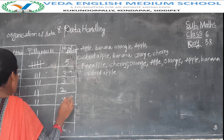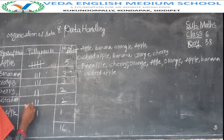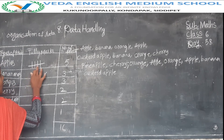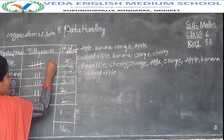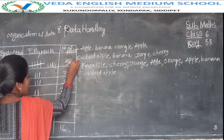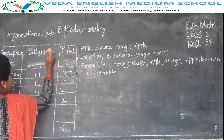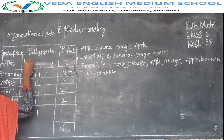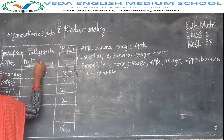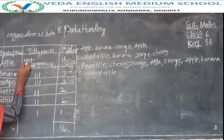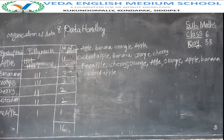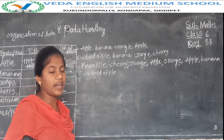A student asks: if I have eight, how do I write it using tally marks? For eight: write four lines, cut to make five, then write three more lines — five plus three is eight. If I have eleven: write four lines and cut for five, then four more lines and cut for ten, then one more line — five plus five plus one equals eleven. Like this you write tally marks for any number.